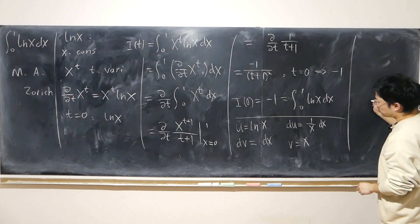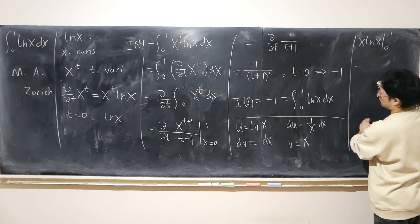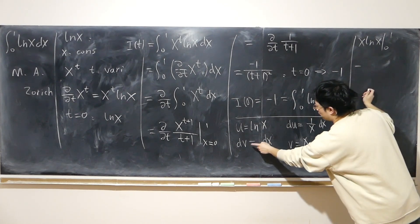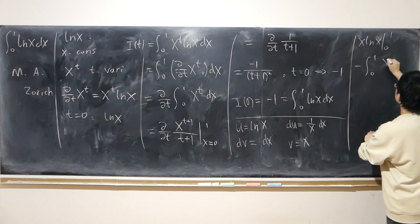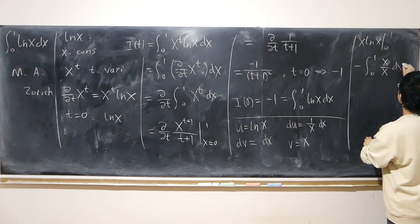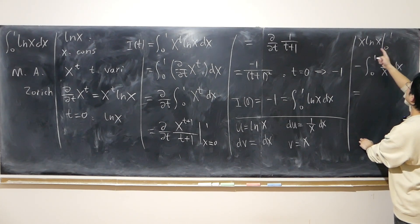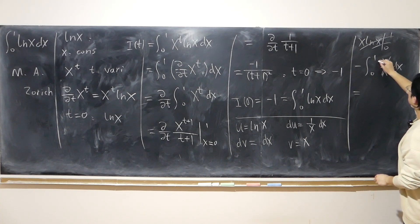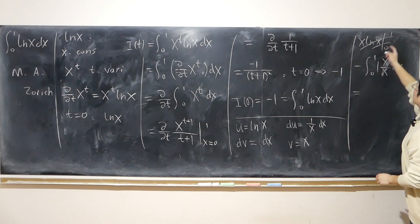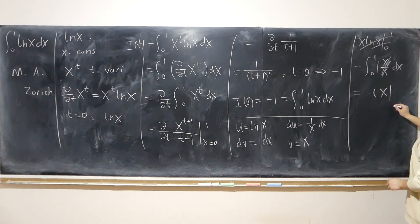So I have u times v minus, previously with u dv, now it's v du. 0 to 1, v du. What is that? 1 times log 1, 0. 0, 0, this is gone. Negative, so antiderivative, just x.